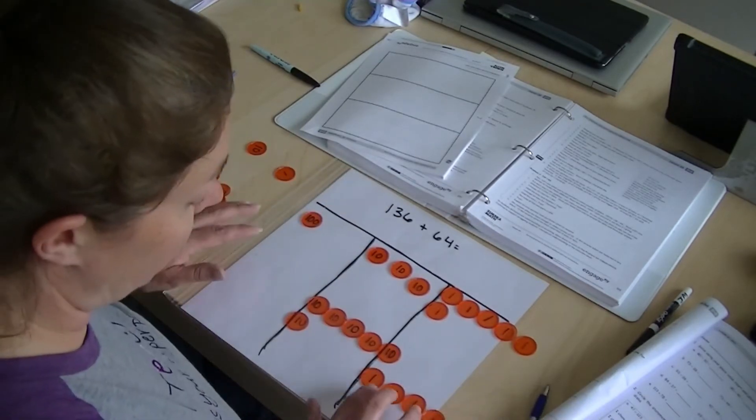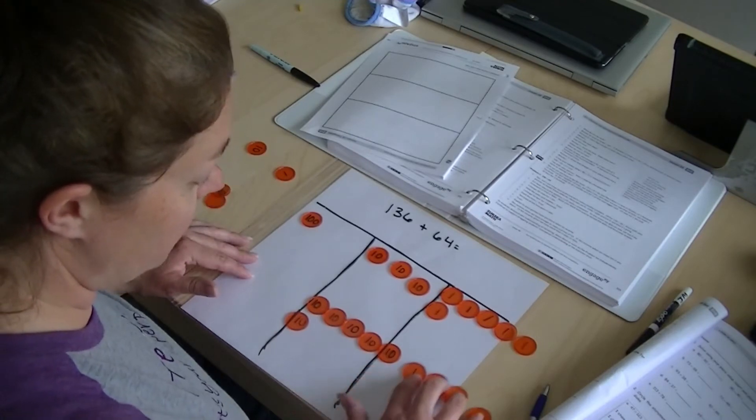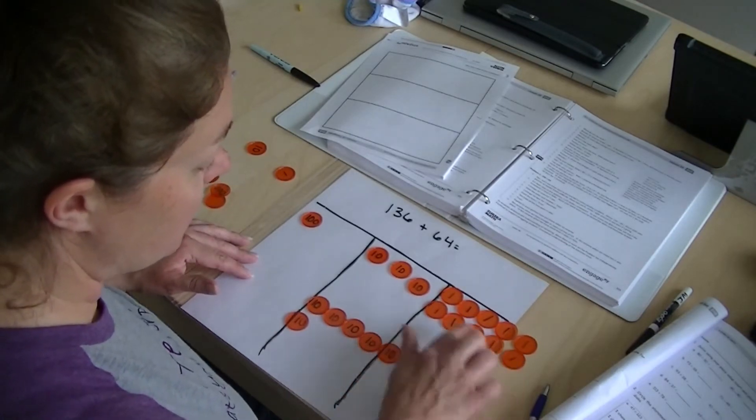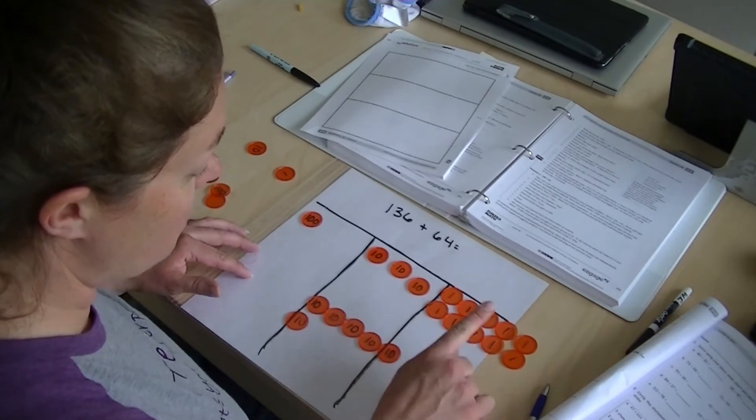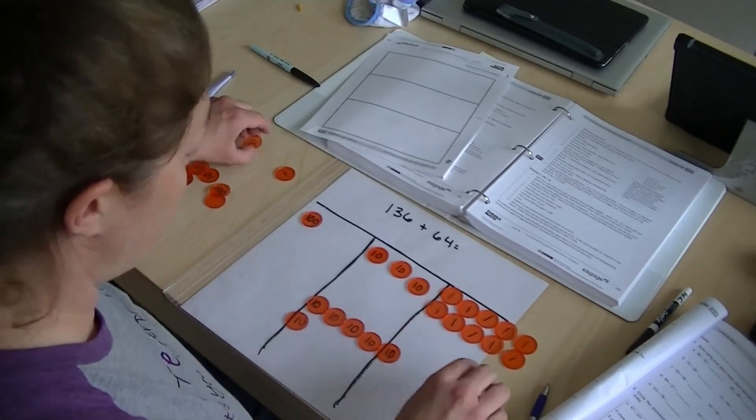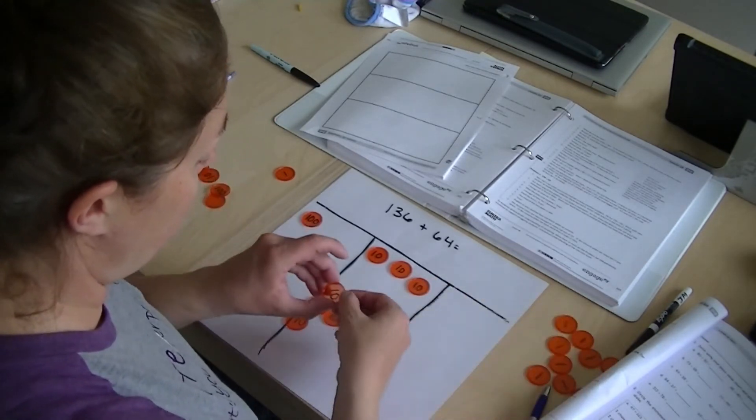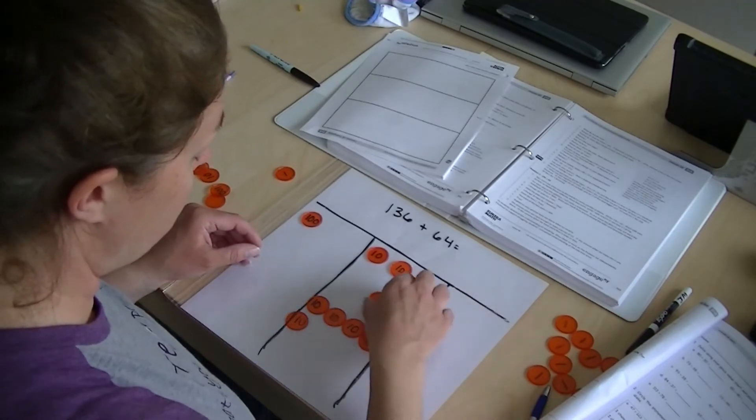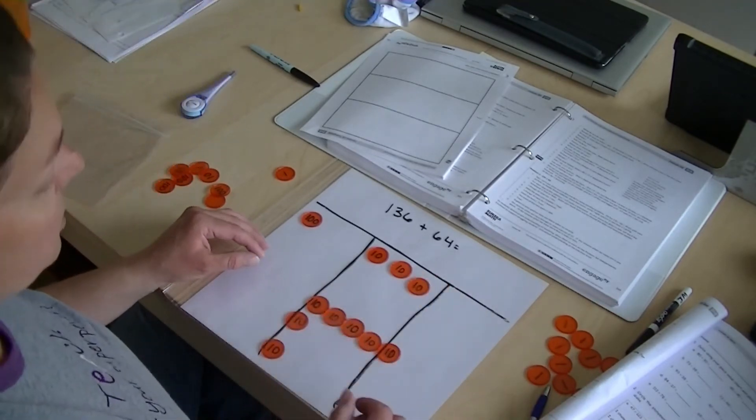So let's combine ones to see if we can make a 10. Okay, so we have 10 here, 10 ones. They are going to go away and now they're a bundle. I'll put them down here so we don't get mixed up.